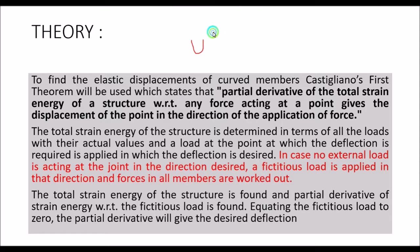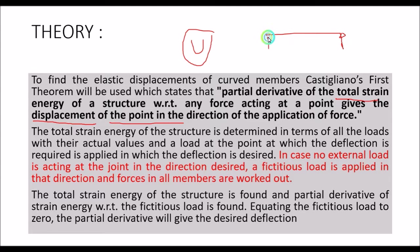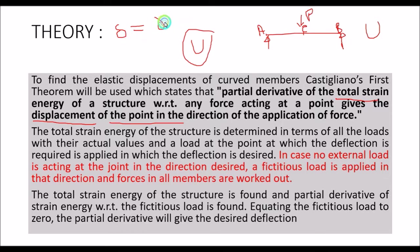Suppose the total strain energy is U. The partial derivative of this total strain energy gives the displacement of the point. Suppose this is a simply supported structure with points A, B, and C. The deflection at point C will be calculated as the partial derivative of U with respect to the applied force. Suppose a point load P is applied — the displacement delta equals the partial derivative of U with respect to P.